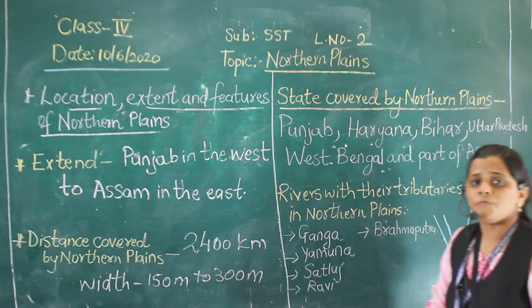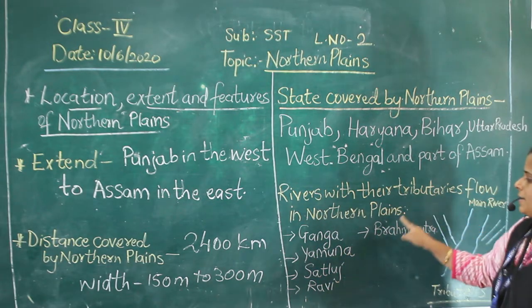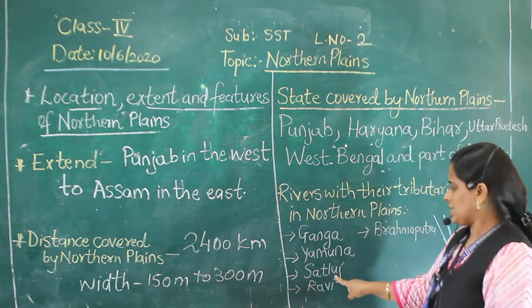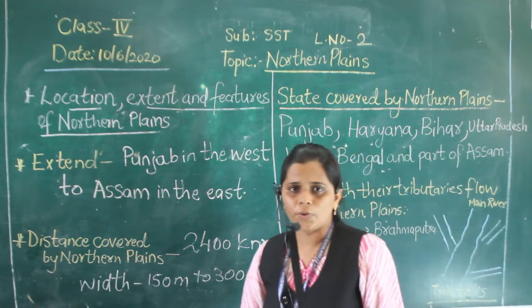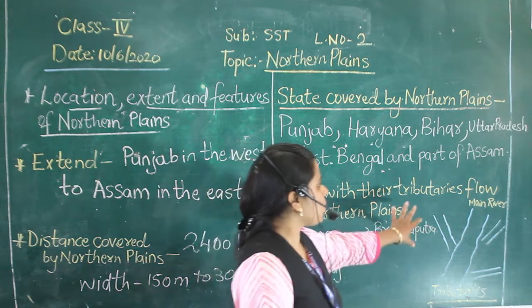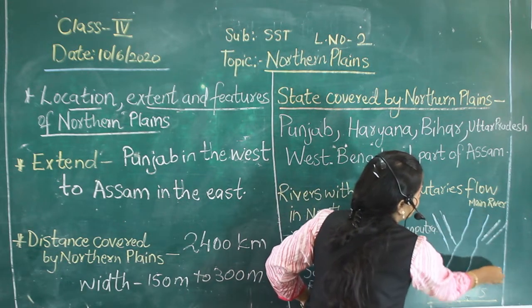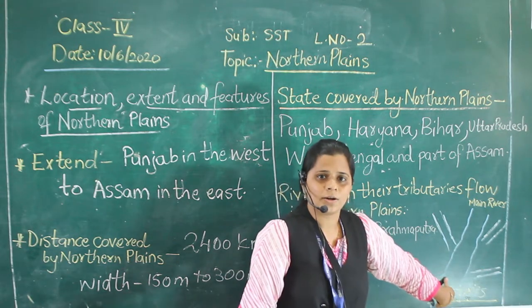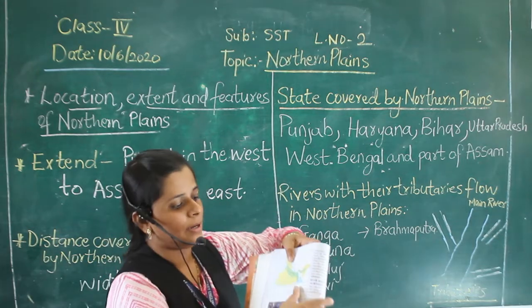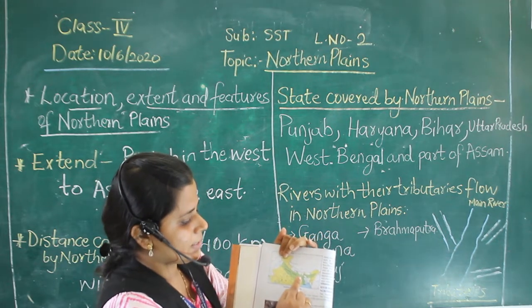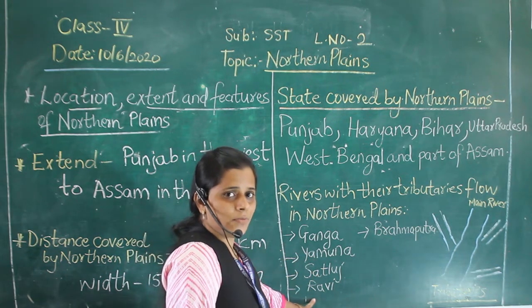Now we will proceed further. The northern plains are watered by rivers with their tributaries — that is Ganga, Yamuna, Sutlej, Ravi, and Brahmaputra. Now 'tributaries' is a new term. Tributaries means many small rivers which join the main river. So many rivers with their tributaries flow in the northern plains — Ganga, Yamuna, Sutlej, Ravi, and Brahmaputra.